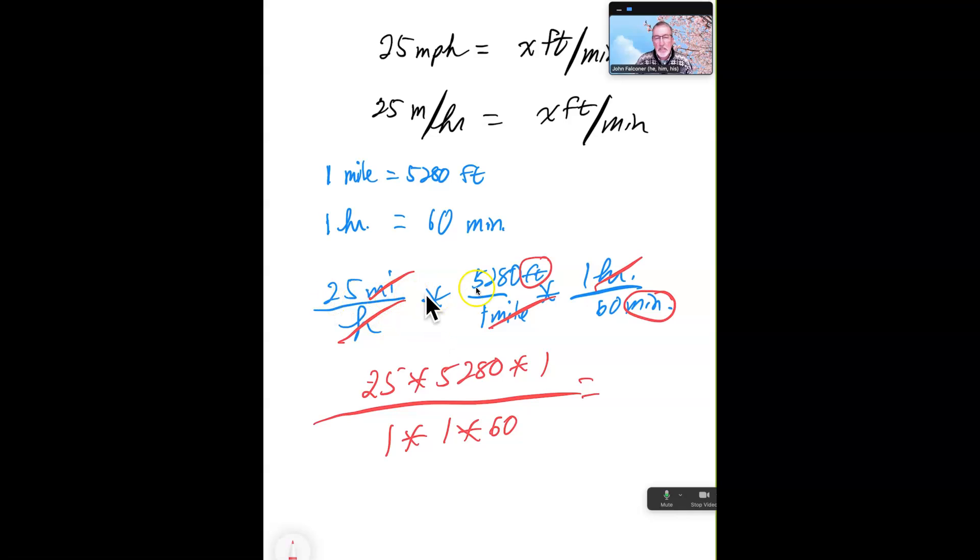So what we have to do is whatever remaining work there is here. 25 times 5,280 times one, if you want. And then we've got one times one times 60. So you could pre-reduce these. Like if you were to reduce this to five and this to 12, might make the math a little easier. But one nice perk about being in math at this level, you get to use a calculator for this unit. So let's go ahead and do that.